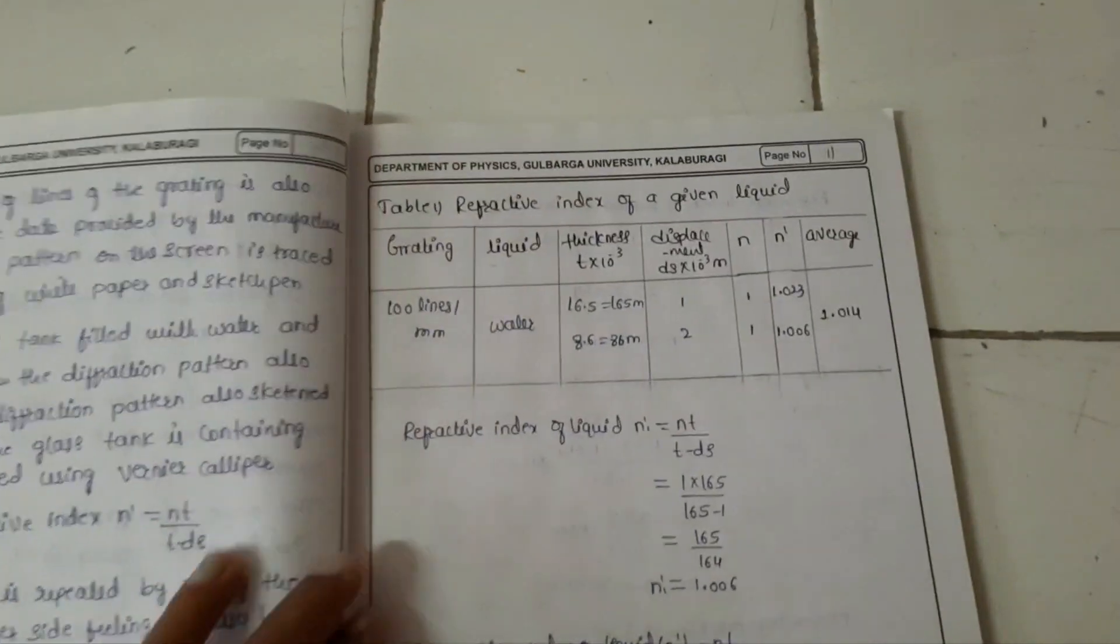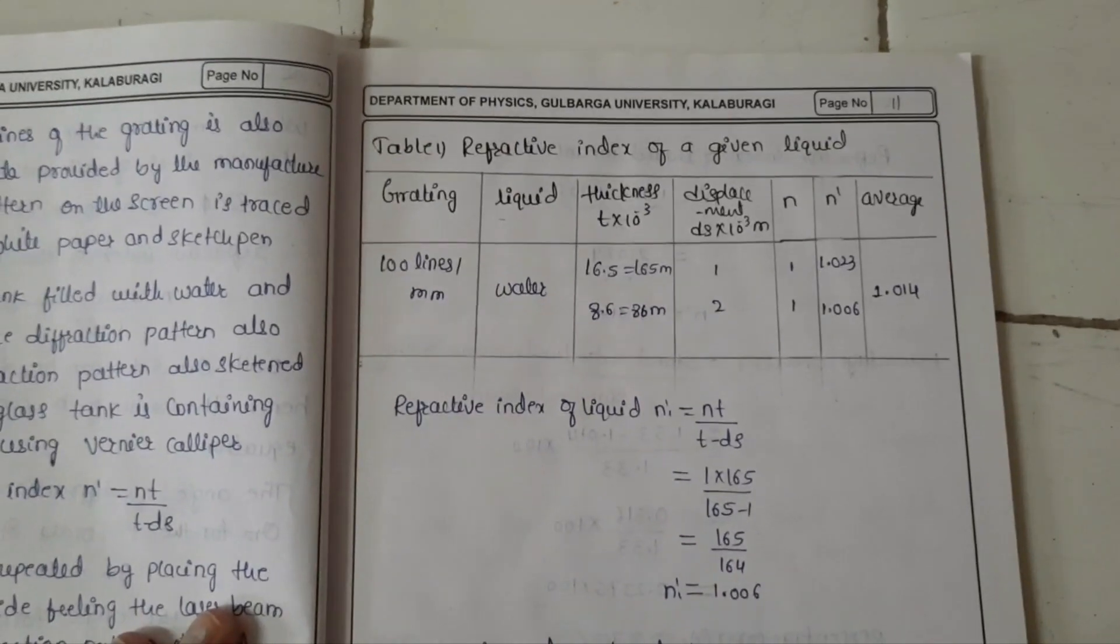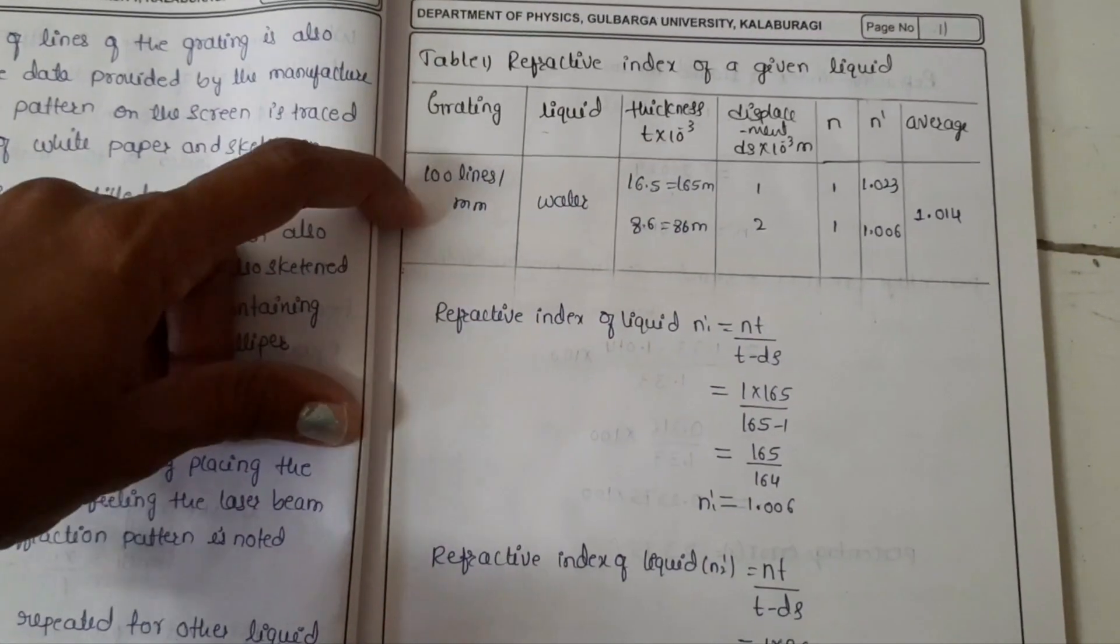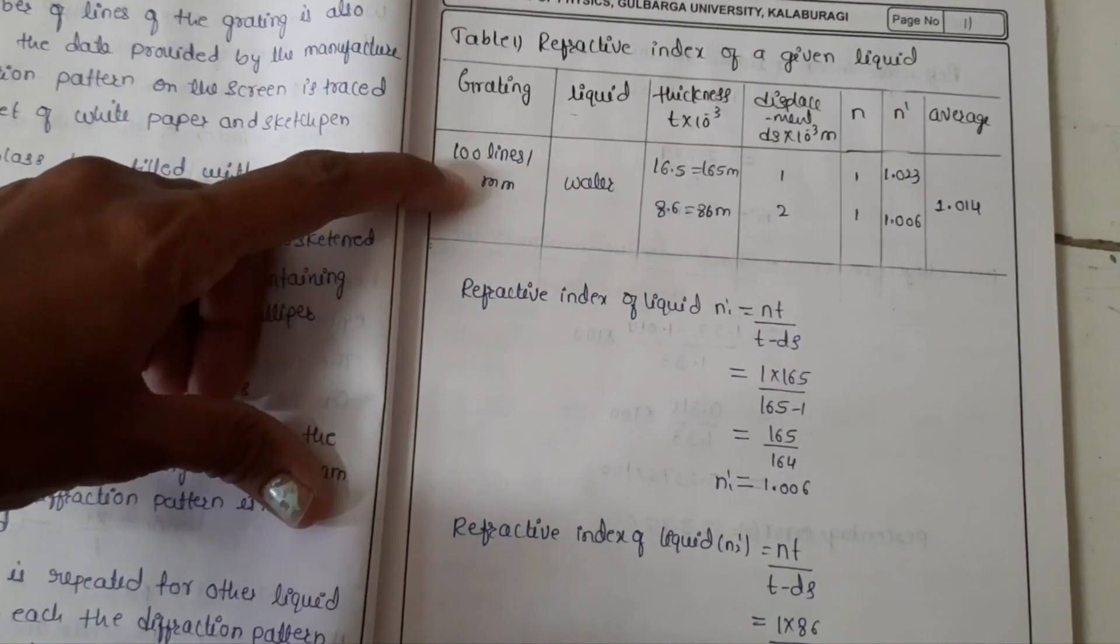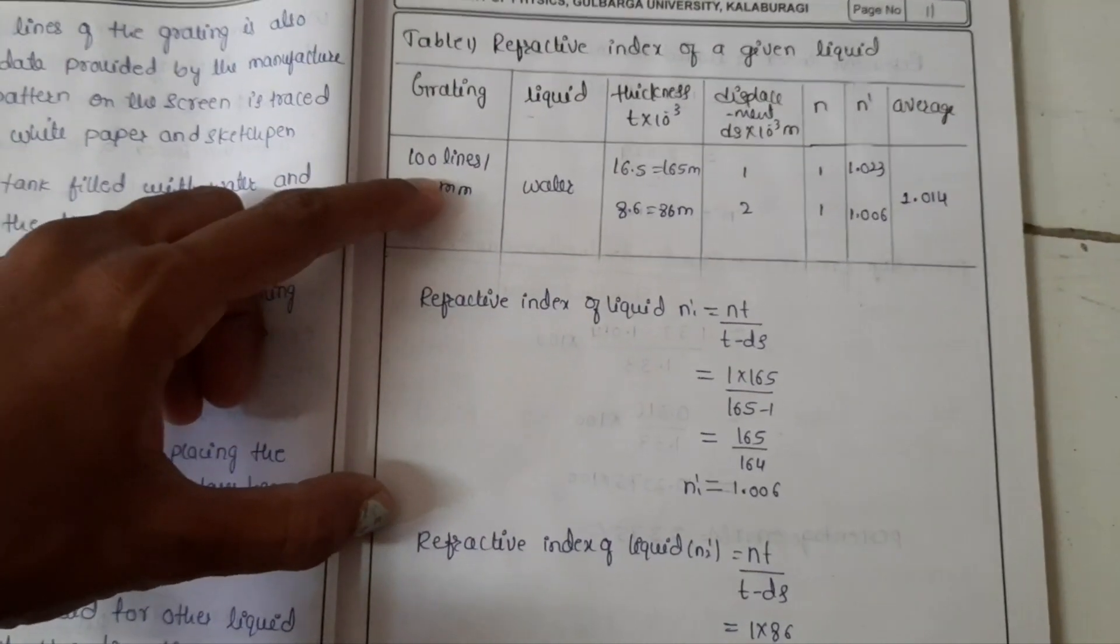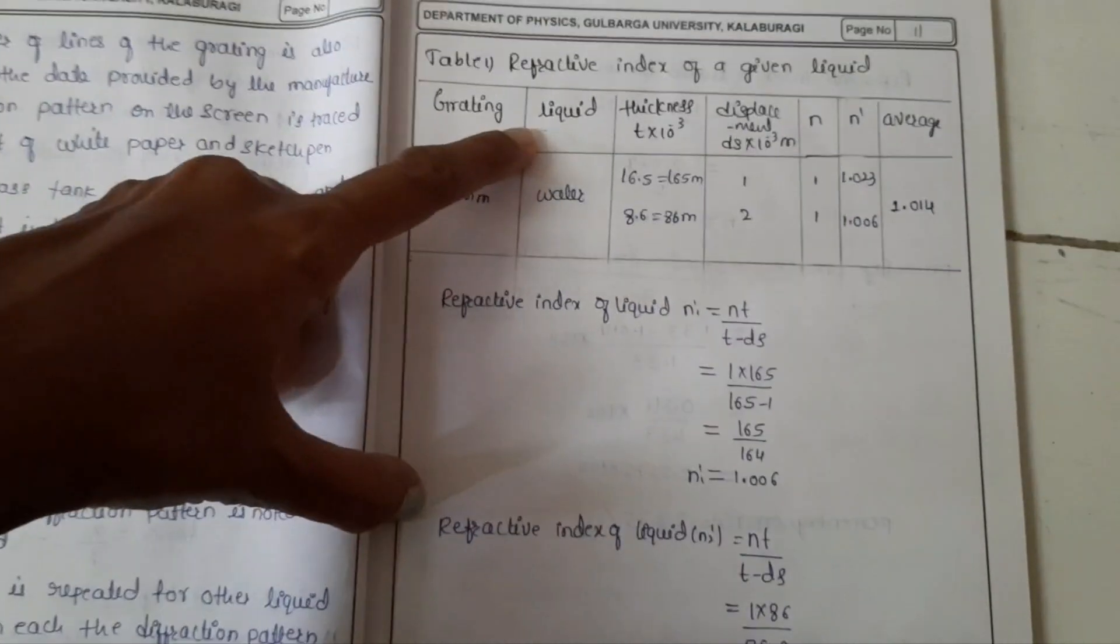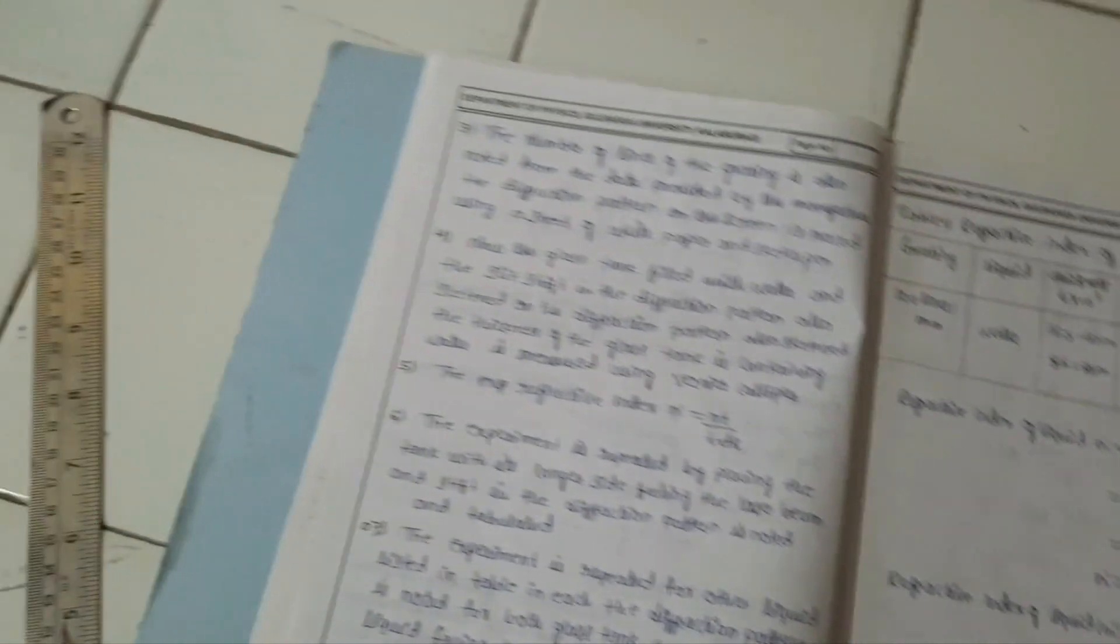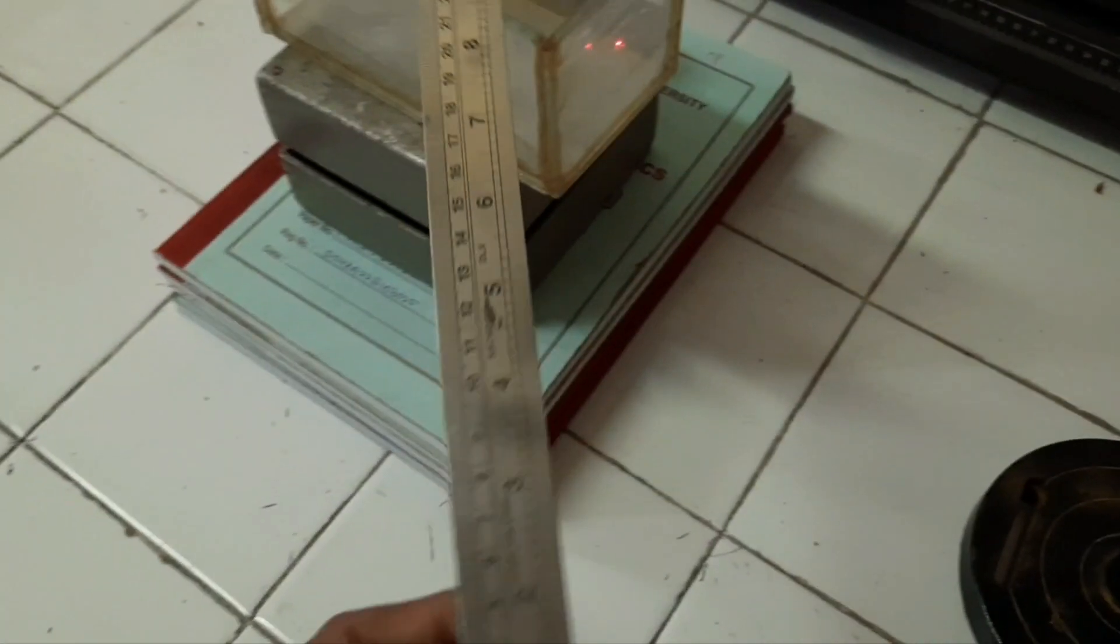So the tabular column is like this to measure the refractive index of a given liquid, grating 100 lines per mm or whichever you want, you can select that liquid, water, thickness. So thickness of the beaker you can measure using the scale.